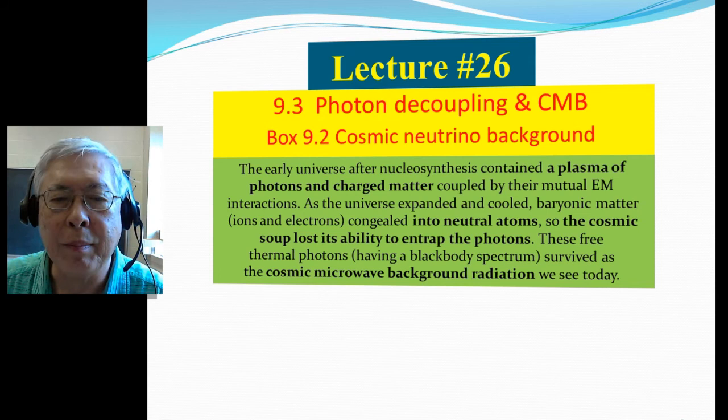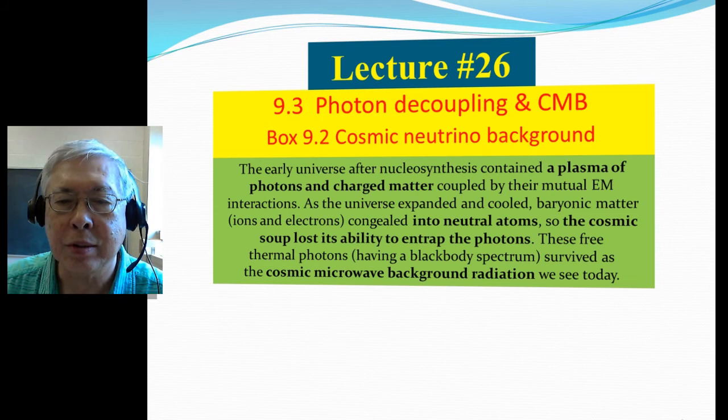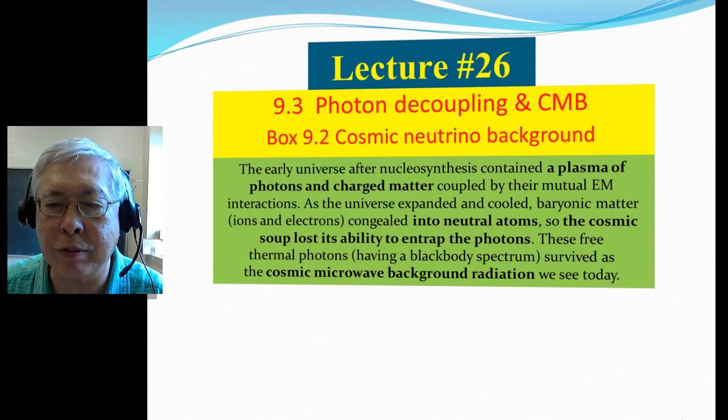As the universe expands and cools, baryon matter, ions, and electrons congeal into neutral atoms. So the cosmic soup lost its ability to entrap photons because they are neutral particles, and the cross-section of the photon scattering goes to zero.